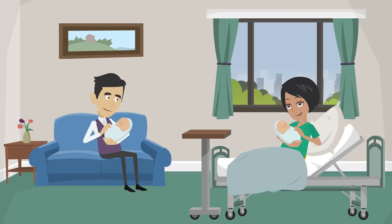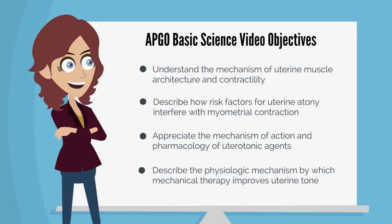Thankfully for Ms. GB, she had a multidisciplinary team which had practiced to handle her obstetric emergency. She responded well to uterotonics and bimanual massage and is now enjoying time with her two newborns. This concludes this APCO basic science objective video about uterine atony. You should now be able to understand the mechanism of uterine muscle architecture and contractility, describe how risk factors interfere with myometrial contraction, appreciate the mechanism of action and pharmacology of uterotonic agents, and describe the physiologic mechanism by which mechanical therapy improves uterine tone.